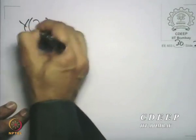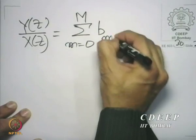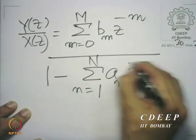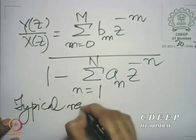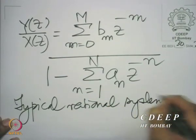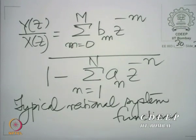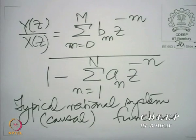Let us take a typical system function: H(z) = Y(z)/X(z) equals the summation of b_m · z^{-m} for m from 0 to M, divided by 1 minus the summation of a_n · z^{-n} for n from 1 to N. This is a typical rational system function. If the system is FIR, then we have no denominator — all the a's would be zero. We are also assuming the function is causal; if it is causal, you can always put it in this form.